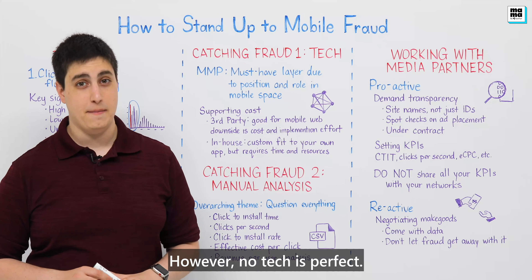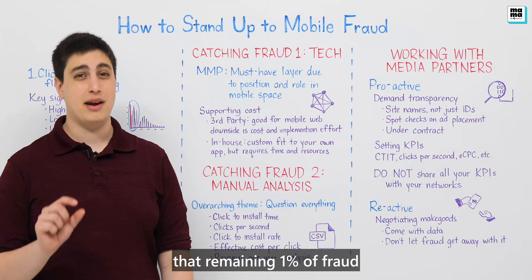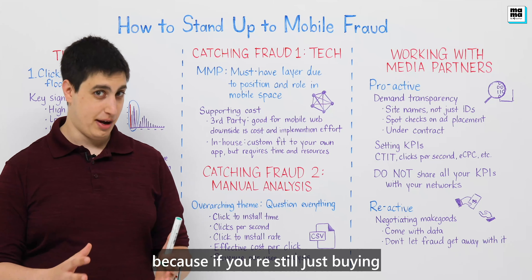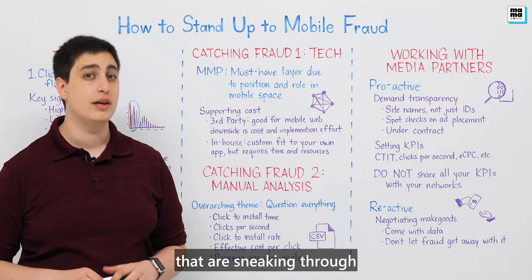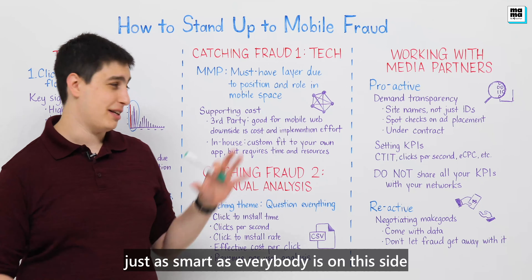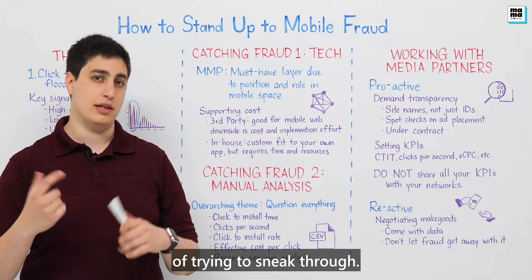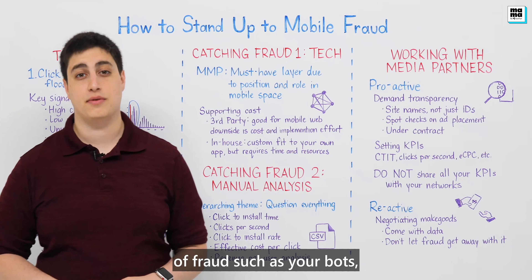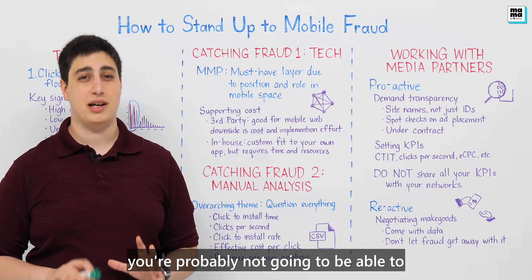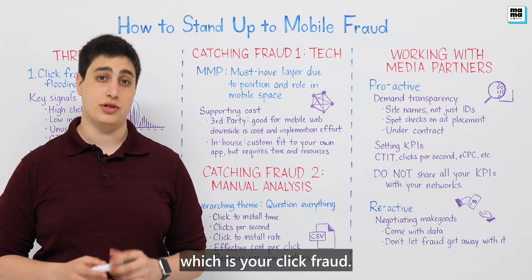No tech is perfect. Even if a solution catches 95% or 99% of fraud, that remaining 1% can quickly become 100% of your budget if you're not careful — if you're still buying from publishers that are sneaking through. Just as smart as everyone is on the defense side, fraudsters are equally smart. For the more advanced types like bots, SDK spoofing, emulators, and device ID fraud, you're probably not going to catch much manually. However, you can catch a lot of the more basic upper-funnel click fraud.